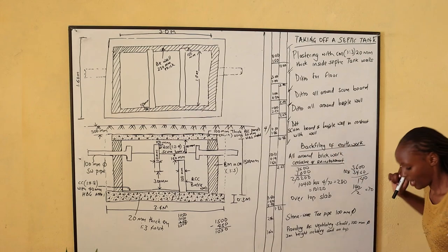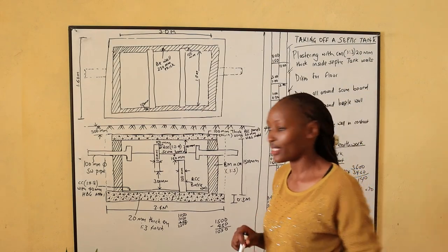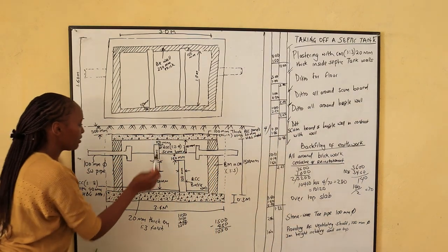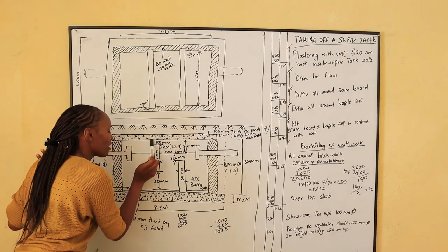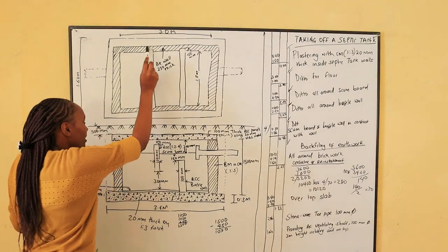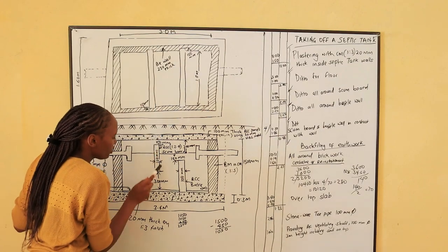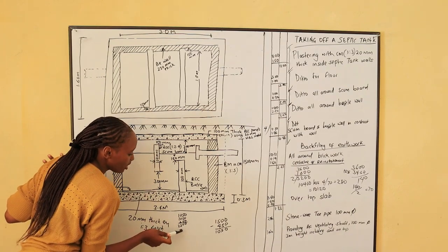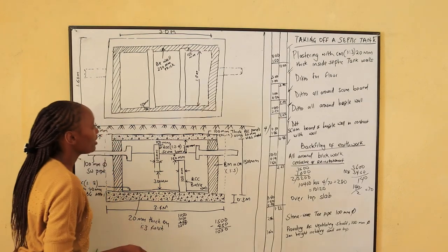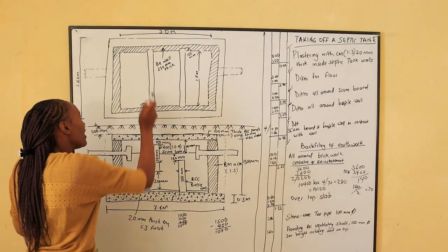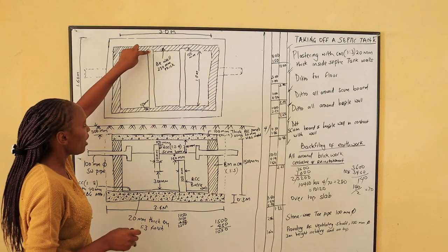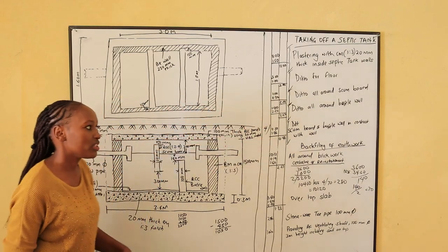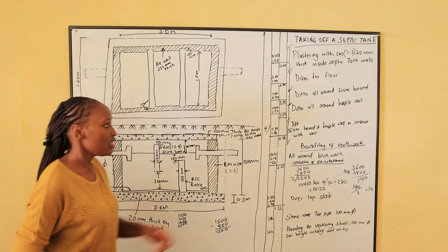Then we go to plastering for the scum board — all around the scum board. From the section we can see the scum board: this length is 1050, this other side is 1050, and the thickness is 100, 100. So the total perimeter of the scum board is 2.3m. We multiply by the length — we are plastering only what is inside, so it's 1 meter. All around the scum board is 2.3, so the total area to plaster for the scum board is 2.3 square meters.